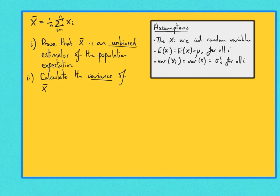We know that the formula for the sample mean, x-bar, is equal to 1 over n times by the sum from i equals 1 to n of xi. We have several assumptions: all of the xi are iid random variables — that is, independent and identically distributed. The expectation of each xi is equal to mu of x, the overall population expectation. And the variance of the x's is equal to sigma squared x for all observations.